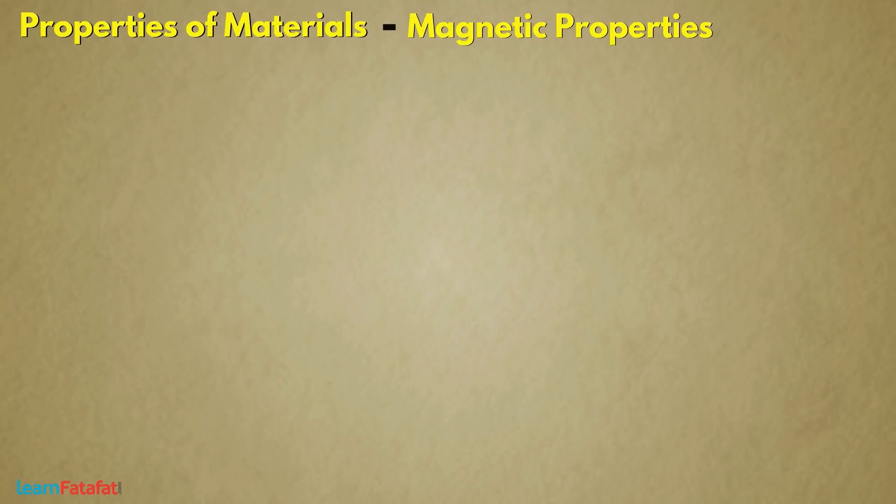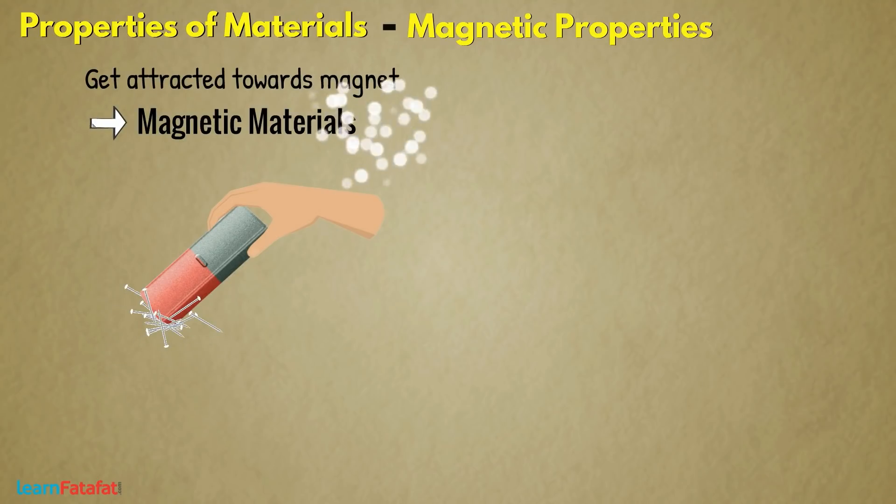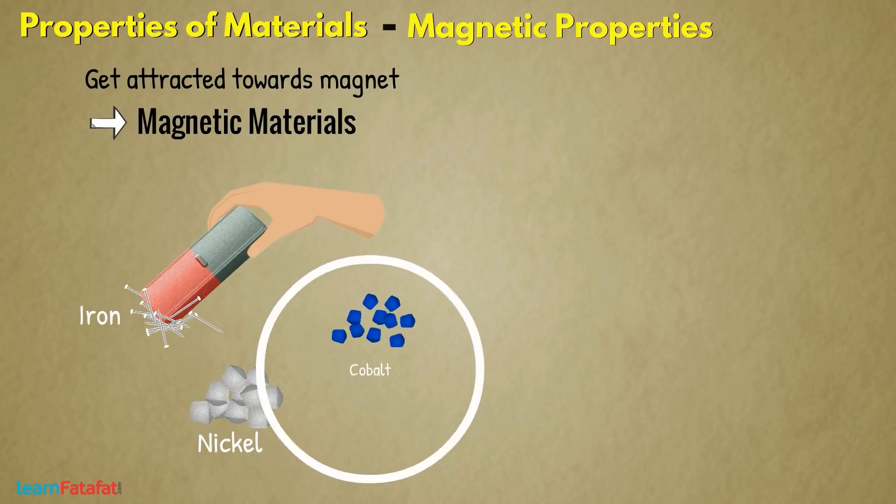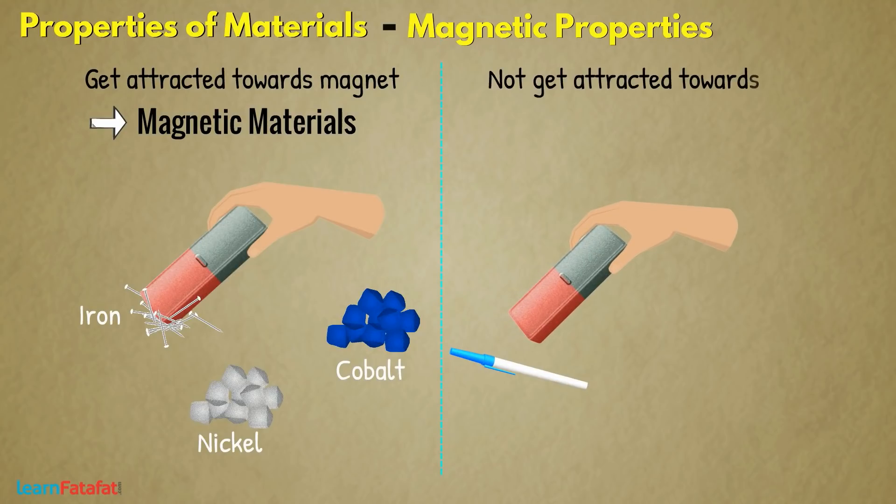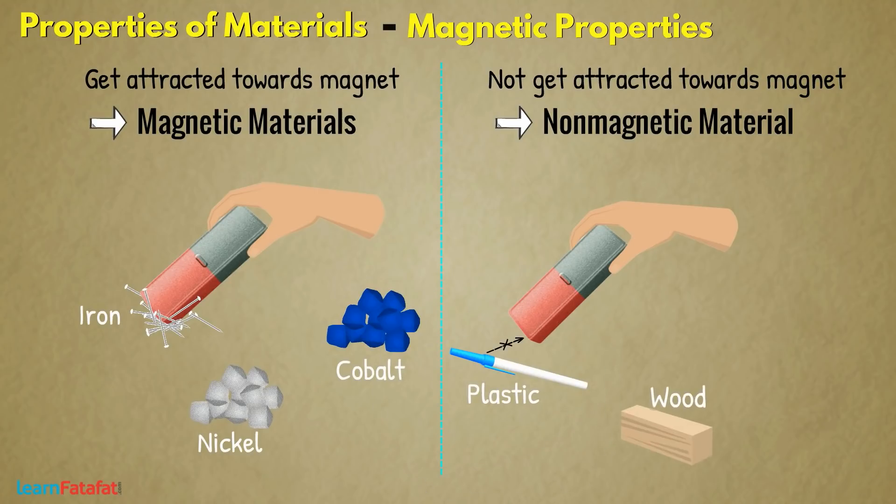Magnetic properties. Some materials get attracted towards magnet. These are magnetic materials. For example, iron, nickel, and cobalt. Others which do not get attracted towards magnet are non-magnetic material. For example, plastic, wood, paper, glass, etc.